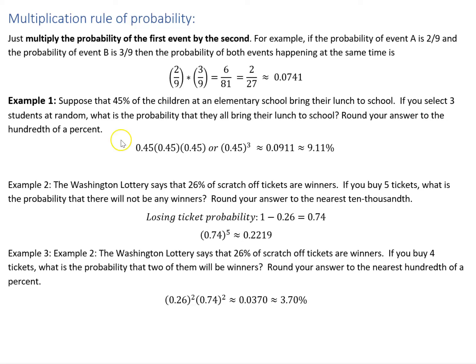So I have three chances — I'm grabbing three kids all at once, and there's a 45% chance each of them has brought their lunch. So I'm just going to multiply 0.45 to the third power. That gives me a decimal approximation, and if I want that as a percent, I move the decimal point over two places, and that's rounded to the hundredth of a percent.